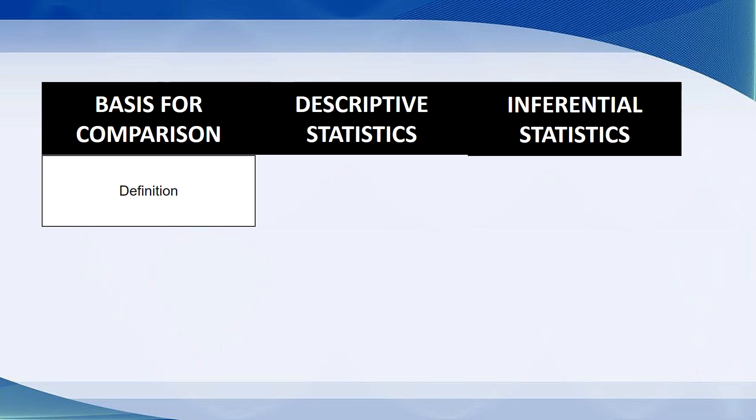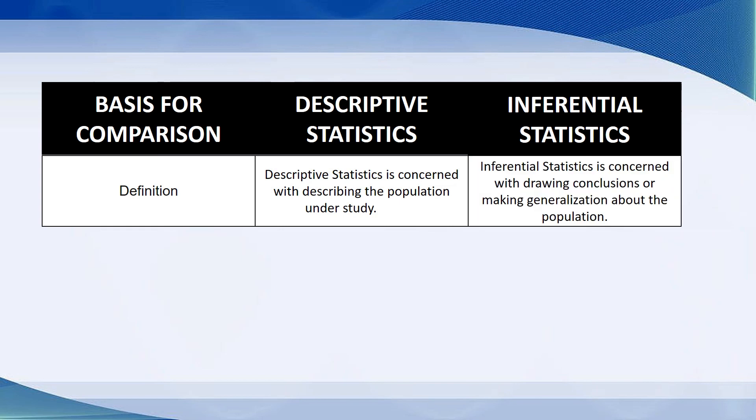Descriptive statistics is concerned with describing the population under study. Inferential statistics is concerned with drawing conclusions or making generalization about the population.